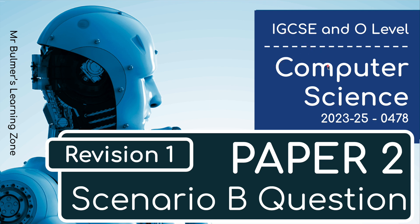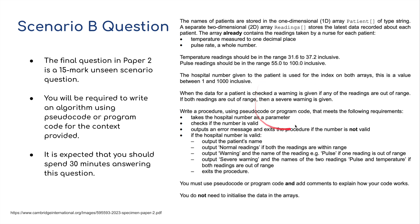This is specimen paper B for the IGCSE computer science. We have another scenario, this time about hospitals, patients, checking temperatures and pulses. It's worth 15 marks. You'll be required to write an algorithm using pseudocode or program code for the context provided. You could probably do this in bullet lists and still get marks, but let's stick to the mark scheme. It is expected that you should spend 30 minutes answering this question.